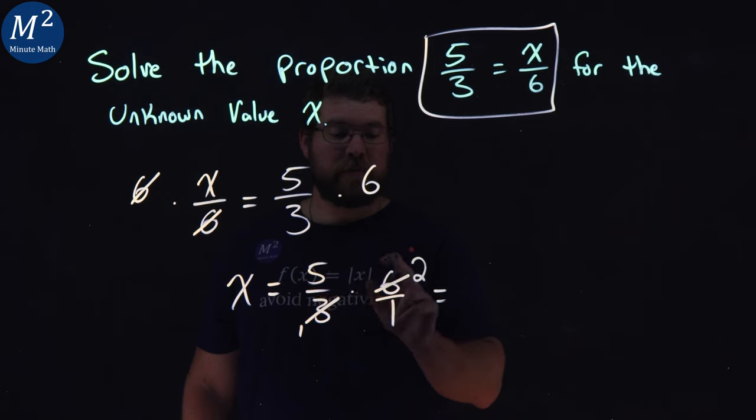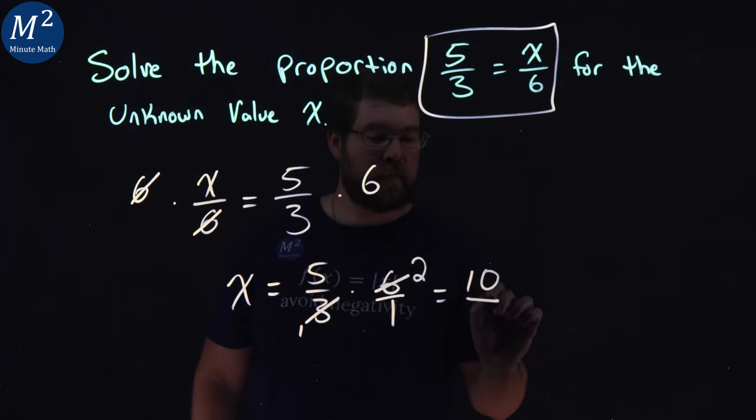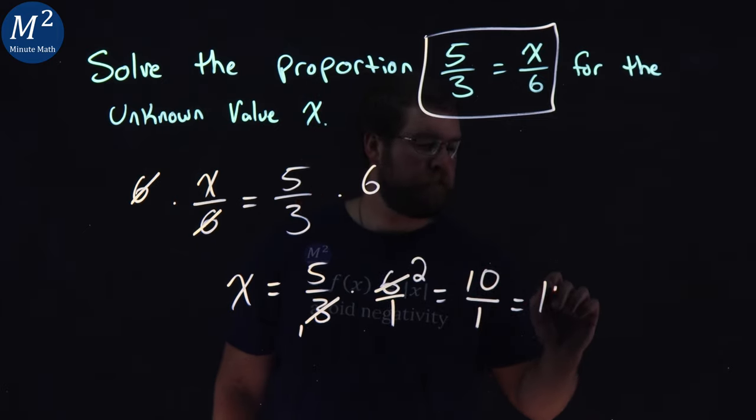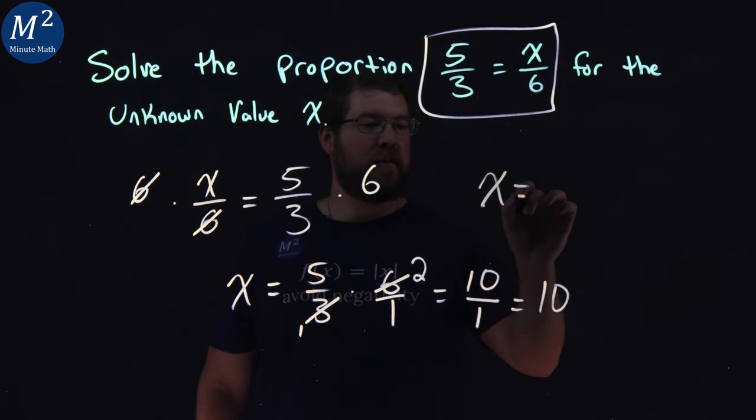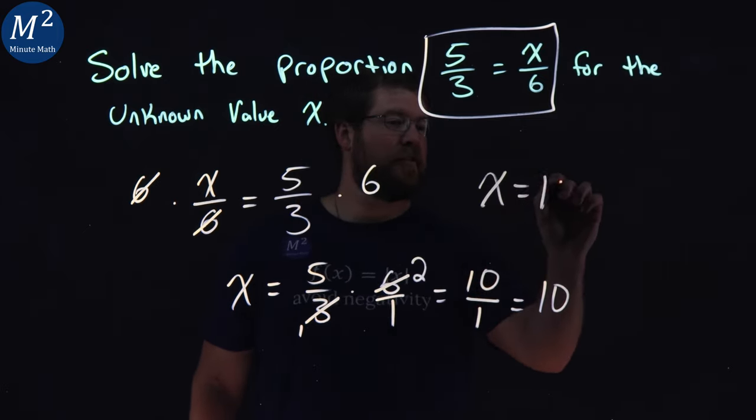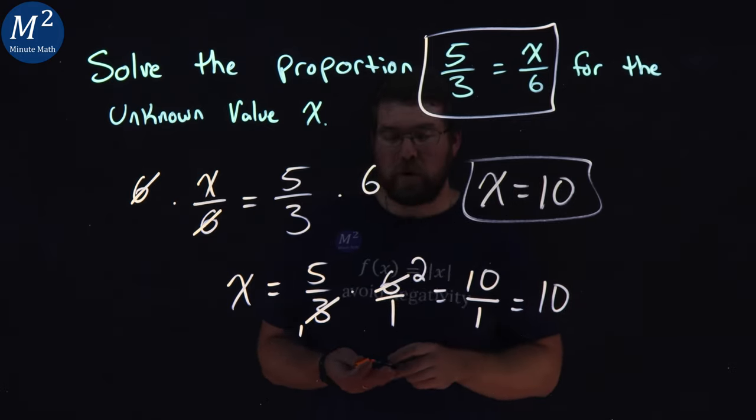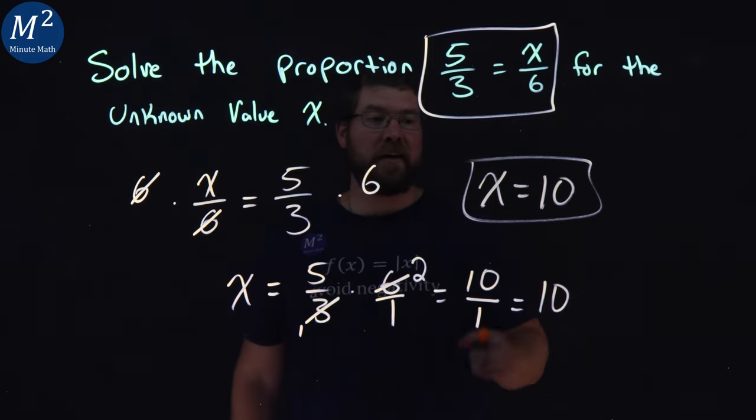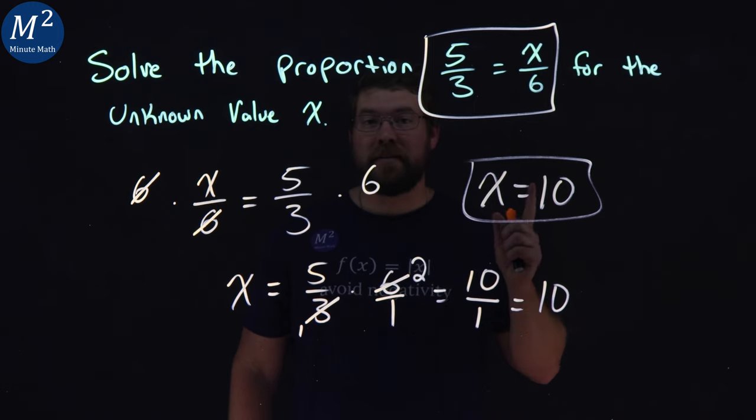And so 5 times 2 is a 10. 1 times 1 is a 1. 10 over 1 is a 10. And so our x value here is equal to just 10. And so when we solve the proportion for the unknown value of x, we have x equals 10.